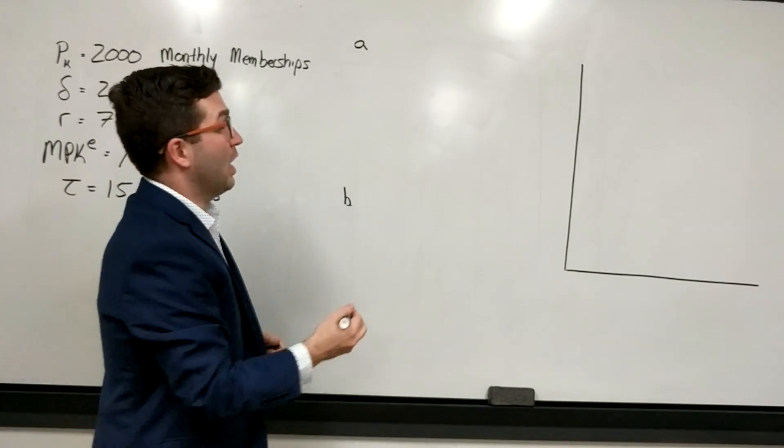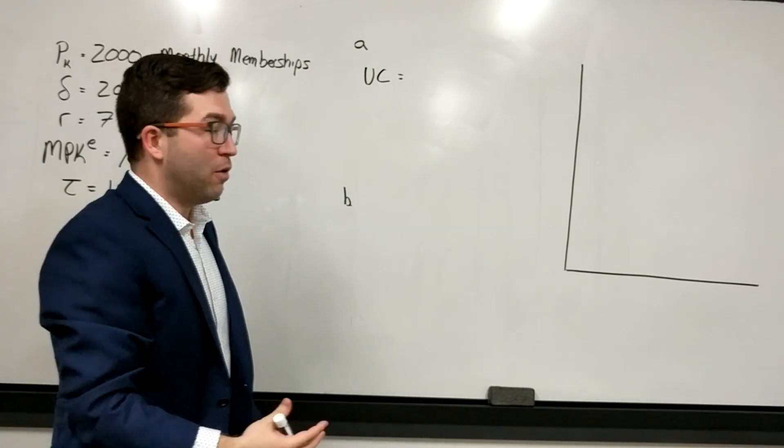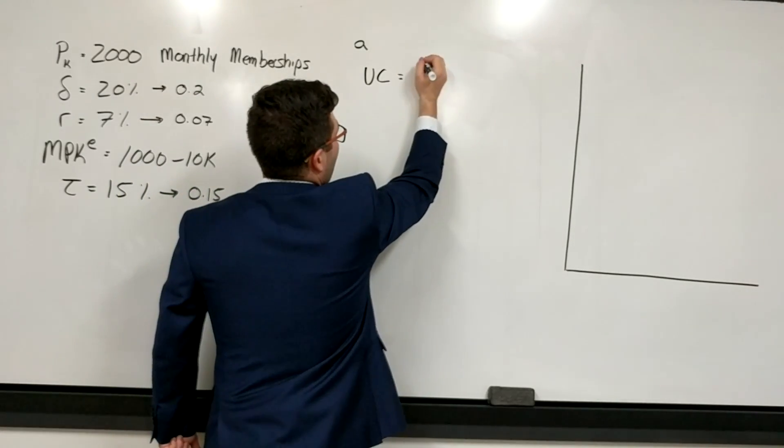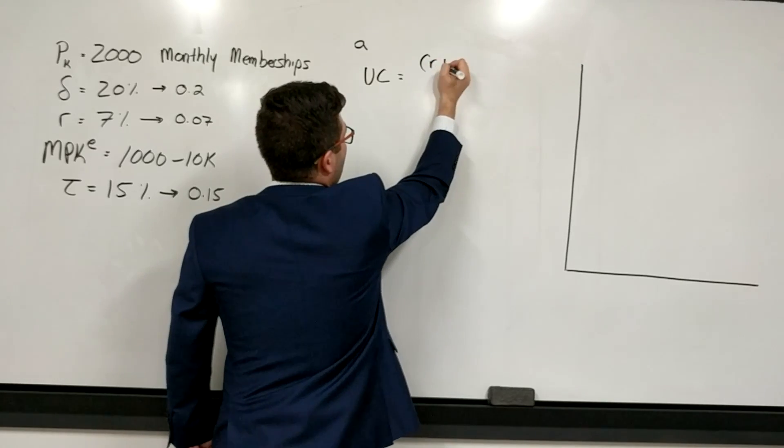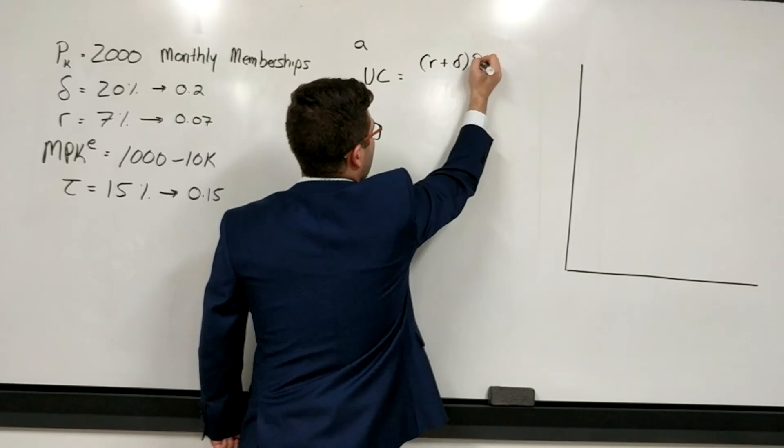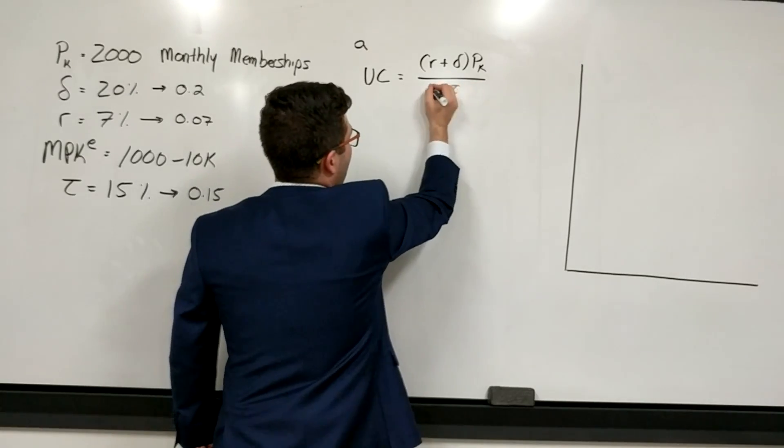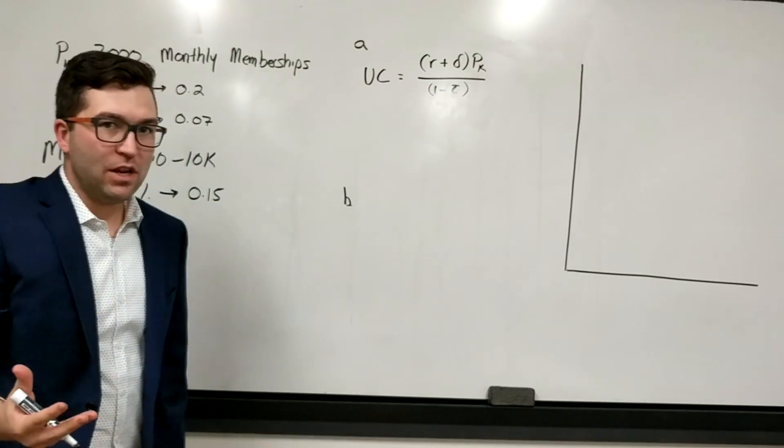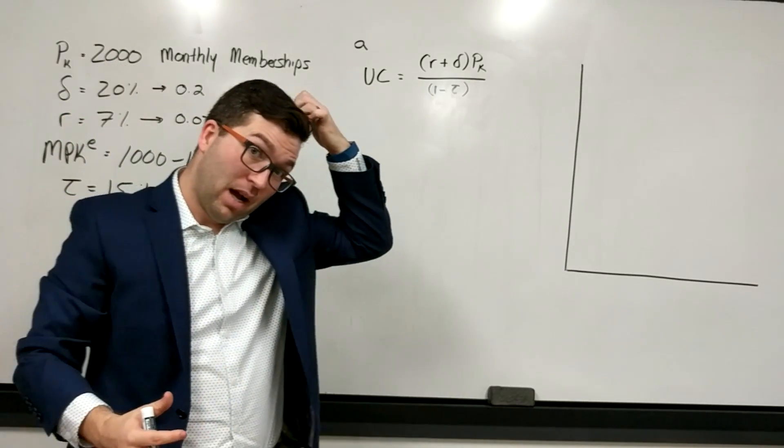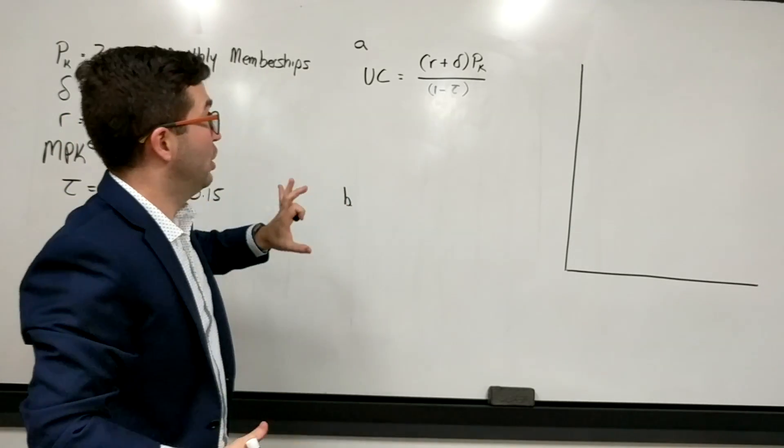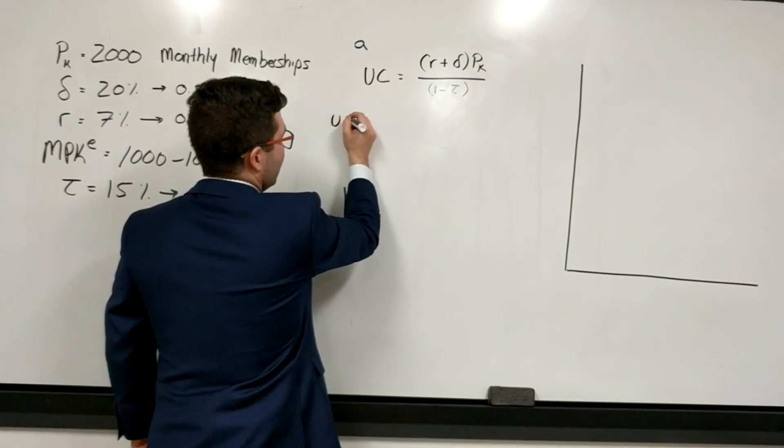And so the first question, part A, asks us to calculate the user cost of capital. The user cost of capital, you should know by now, is a very straightforward equation that says the user cost of capital on the numerator is going to be R plus D times PK, all divided by 1 minus tau. And like I said, I hope to post a video that goes through how to get to this. If not, you can see chapter 19 of the Michigan textbook, it should have a good explanation of this, and then we just have to plug this in.